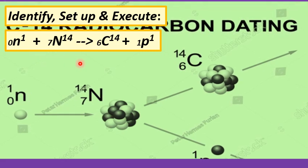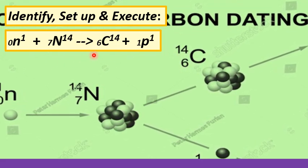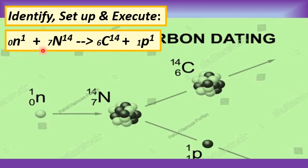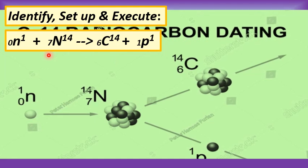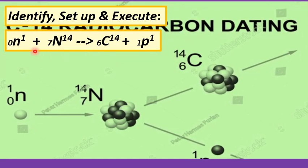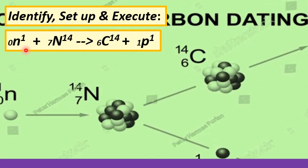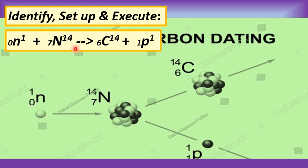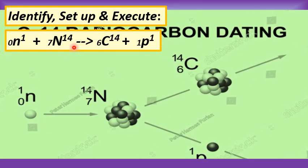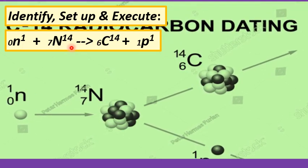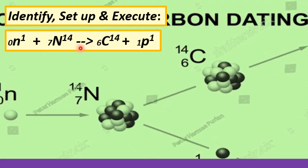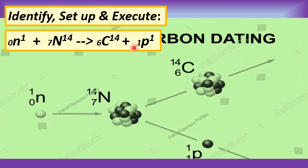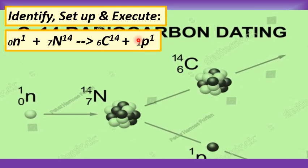The first nuclear equation involved here is given when cosmic rays from the sun collide with atoms in the upper layer of the atmosphere of the earth. Neutrons are produced and when a very energetic neutron collides with a nitrogen-14 nuclide, the nitrogen-14 nuclide will become a carbon-14 nuclide and a proton.